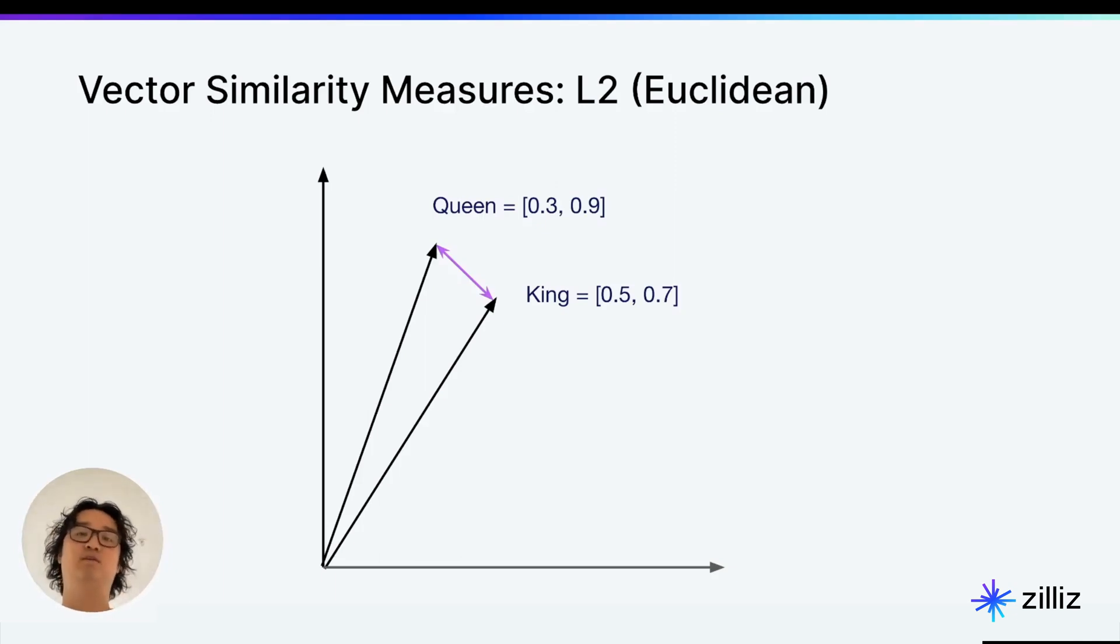and today we're going to be talking about Euclidean, or L2, distance. This is a distance measure that is typically used for low-dimensional data that is continuous.